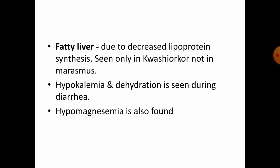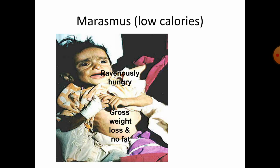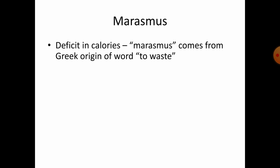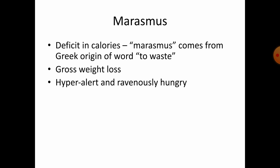Hypomagnesemia (magnesium deficiency) is also seen in Kwashiorkor. Moving on to Marasmus — it is due to low calories, whereas Kwashiorkor is due to low protein. The main signs of Marasmus are hunger and weight loss. The weight-for-age will be less than 60% expected, with no edema. The patient is often stunted and hungry but easier to feed. The word 'marasmus' comes from Greek meaning 'to waste,' so there is gross weight loss and the patient will be hyper-alert and hungry.